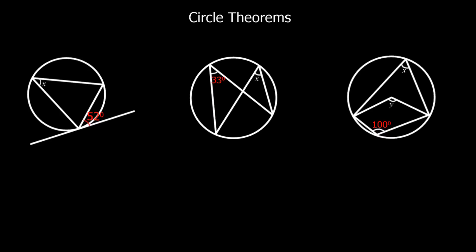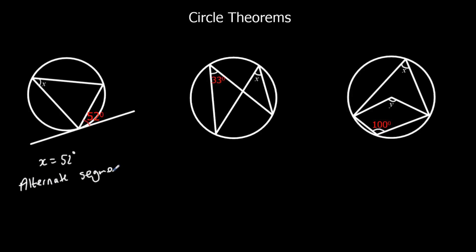Okay, let's look at the first one. We've got a triangle in a circle — it's the alternate segment theorem. So this 52 is equal to x. X equals 52 degrees. And you've always got to give your reasons: alternate segment theorem.